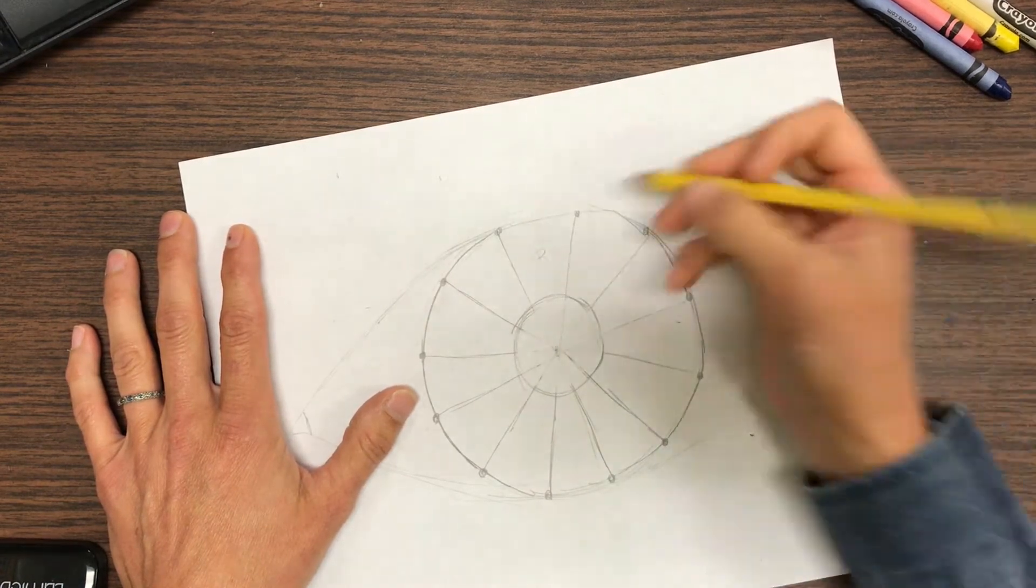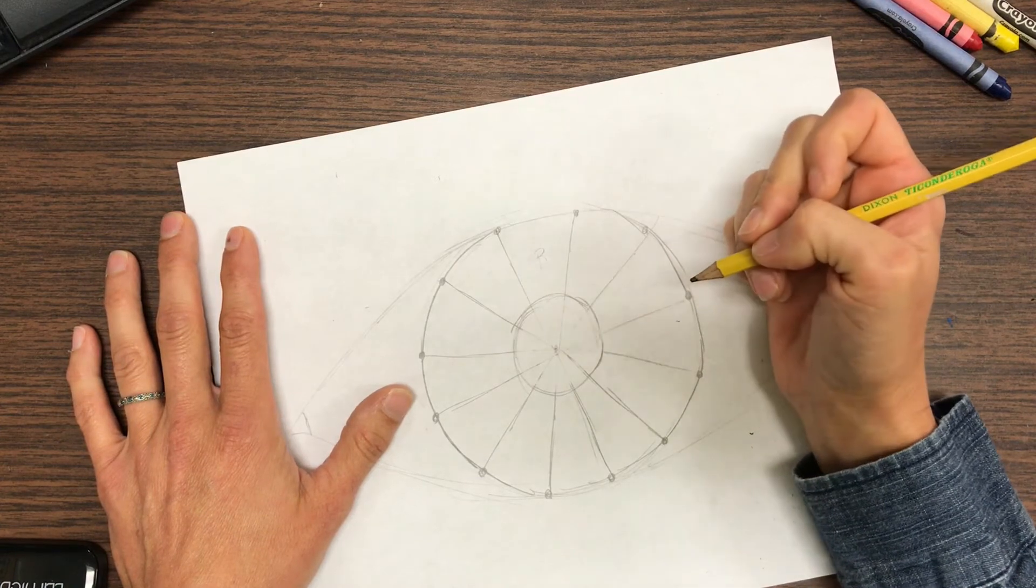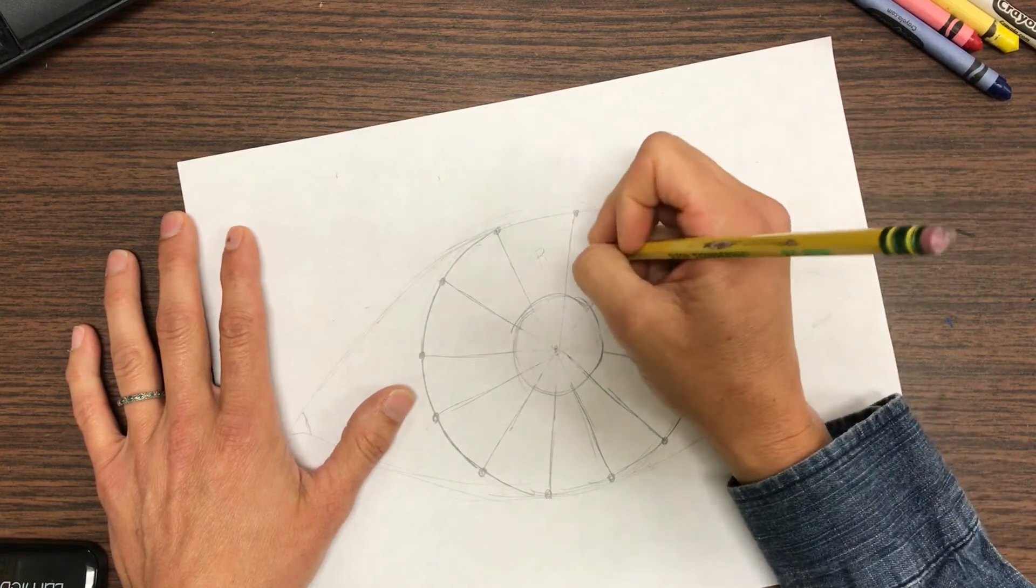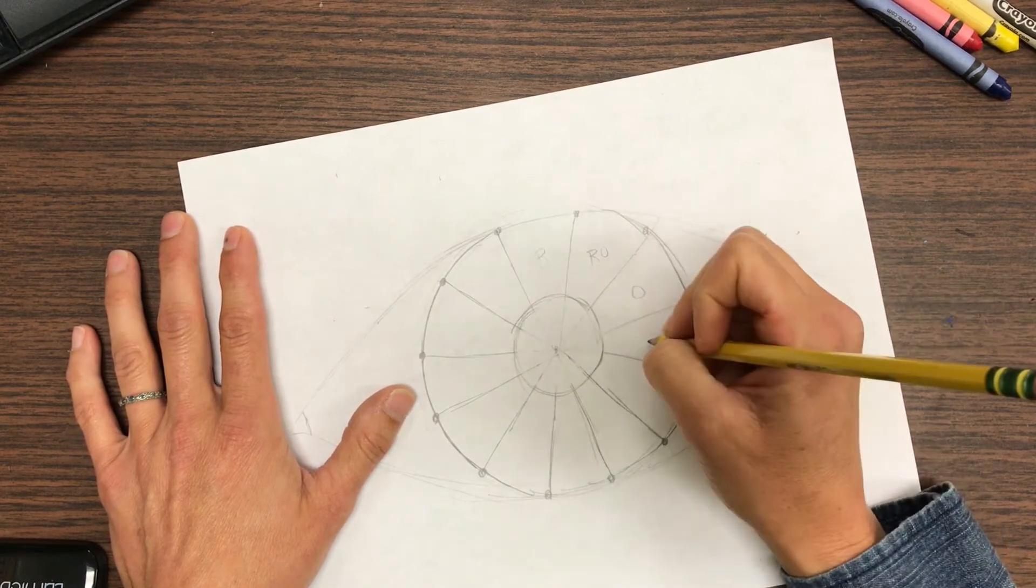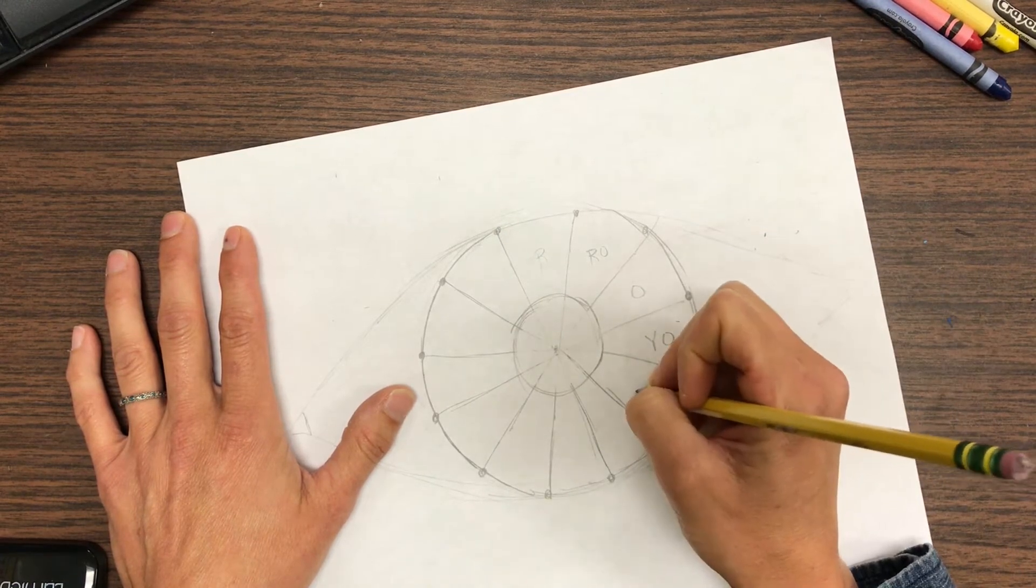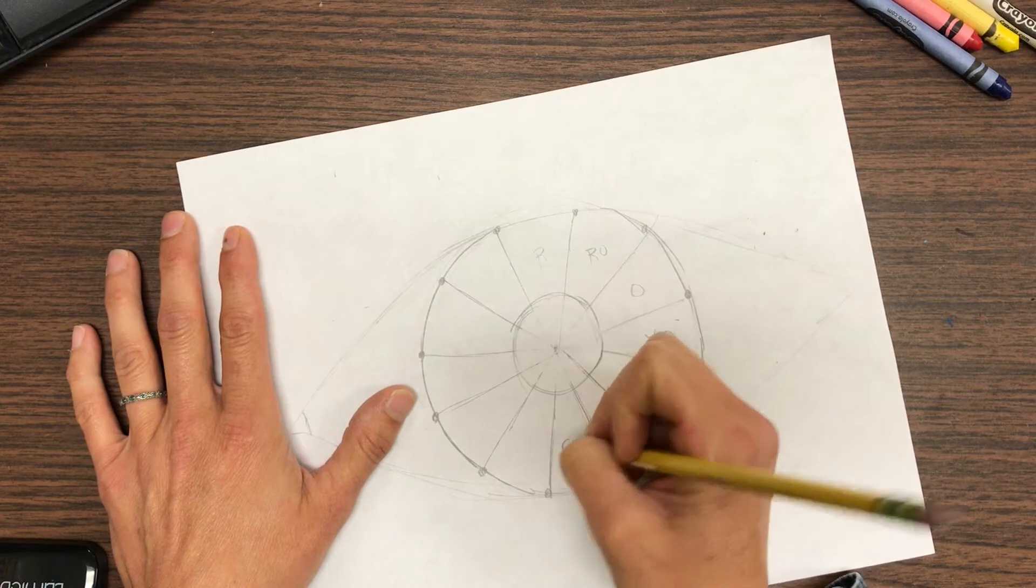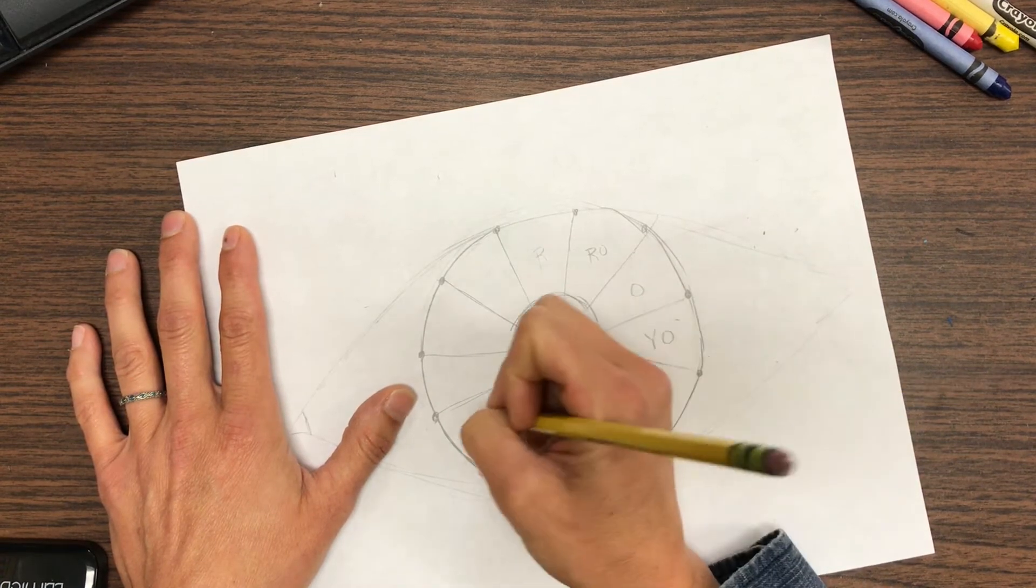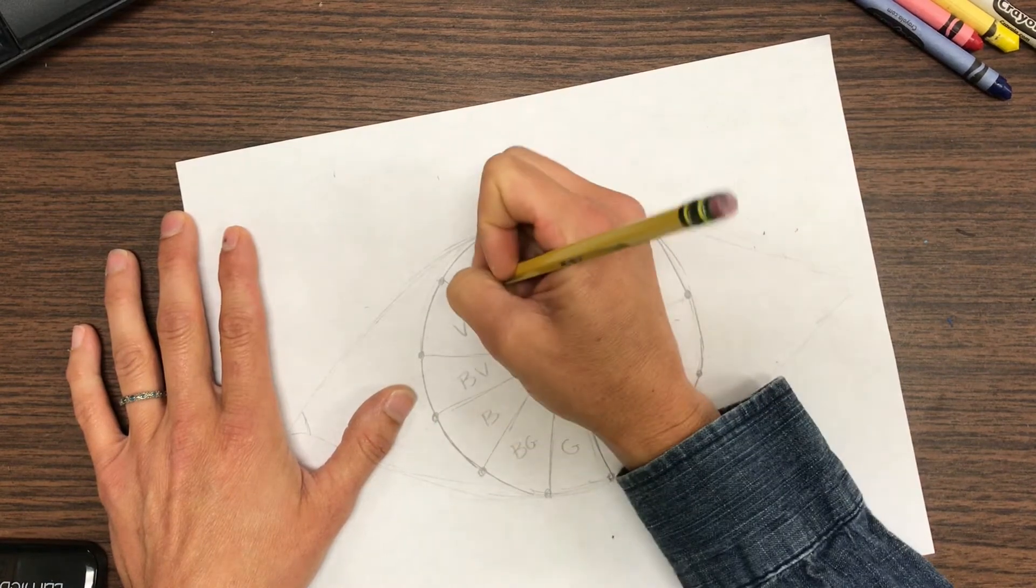If you want to, you can label like an R right here for red. And then we're gonna be doing the primary, the secondary, and the intermediate colors. So this next one would be red orange, so I'm gonna put RO. This one will be orange. This one will be yellow orange, so YO. This one will be yellow, yellow green, green, blue, blue violet, violet, and red violet. And violet is the same as purple.